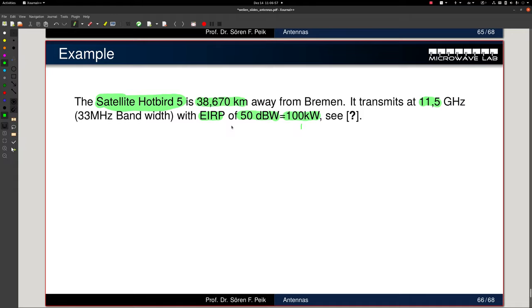This... Or EIRP... EIRP is P transmit times gain transmit. So this is nothing else but P transmit times gain transmit. This is now our received power. And we do not have the antenna or the antenna size. And that's why I do it slightly different.